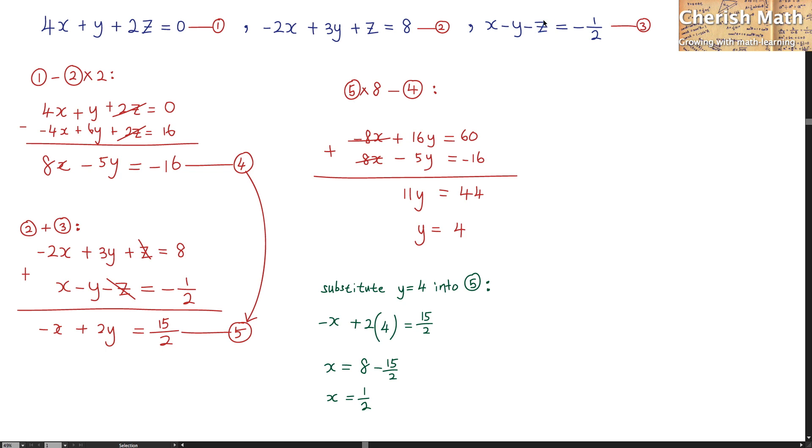For the last variable that left with z, I am going to use the value of x here and the value of y here and substitute into the third equation. This is how it goes. So the result would be substituting the value of x into the third equation that is 1 half, minus the value of y which is 4 here,